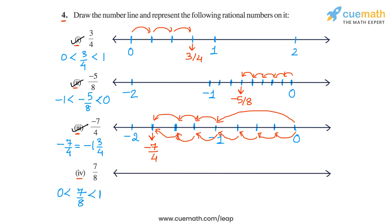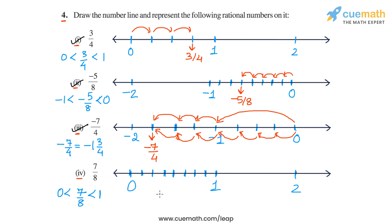Let's draw a number line and make integer markings on it. So let's say this is 0, this is 1, this is 2, and so on. Because 7 by 8 lies in the interval between 0 and 1, let's divide this interval into eight equal parts. First I split it in half, then split each part into two equal parts again — so far I've divided the interval into four parts. Now let's divide each part into two equal parts again, giving us eight equal parts between 0 and 1.